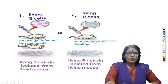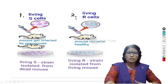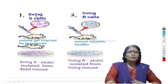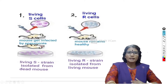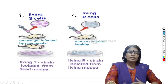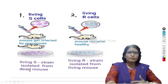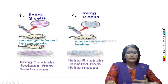Frederick Griffith did four experiments using Streptococcus pneumoniae bacteria. In the first experiment, Griffith took living smooth cells, which are virulent, and injected them into a mouse. The mouse got infected by pneumonia and died. After that, the same living smooth strains of bacteria were isolated from the dead mouse — the same cells that were injected were recovered from the dead mouse.